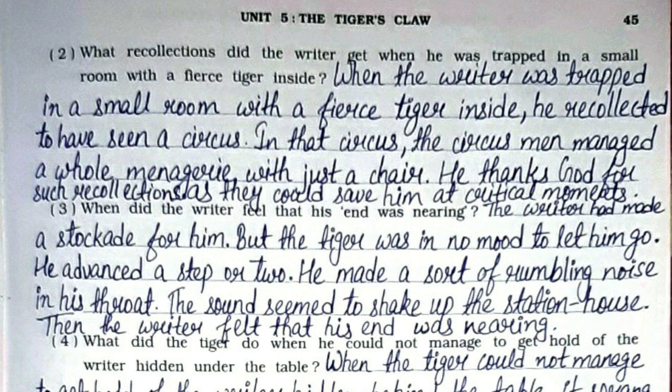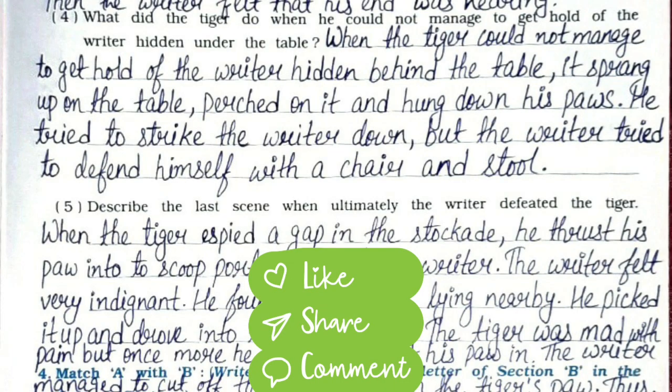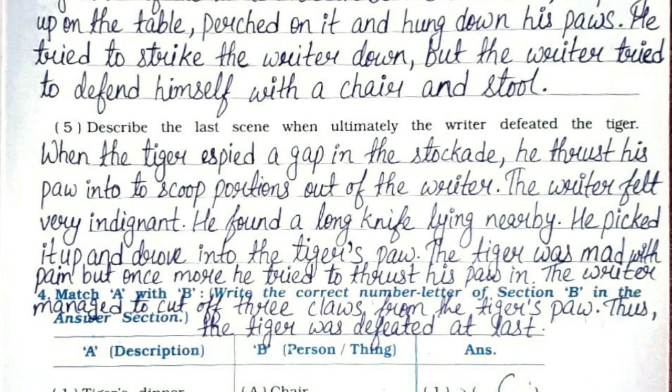Third: When did the writer feel that his end was nearing? The writer had made a stockade for himself, but the tiger was in no mood to let him go. He advanced a step or two and made a sort of rumbling noise in his throat; the sound seemed to shake up the station house, and then the writer felt his end was nearing. Fourth: What did the tiger do when he could not manage to get hold of the writer hidden under the table? When the tiger could not manage to get hold of the writer hidden behind the table, it sprang up on the table, perched on it, and hung down his paws, trying to strike the writer down, but the writer defended himself with a chair and stool.